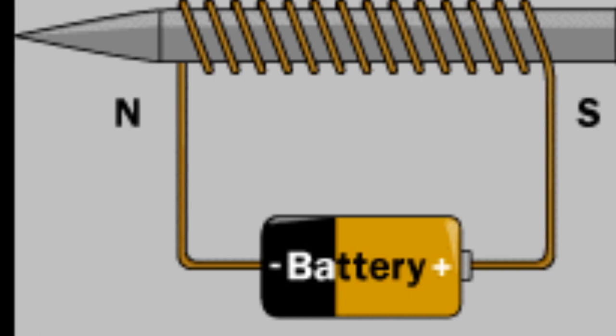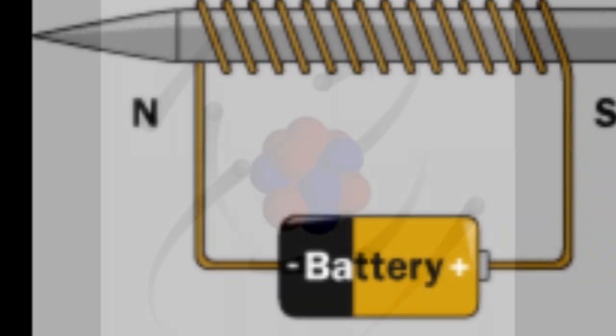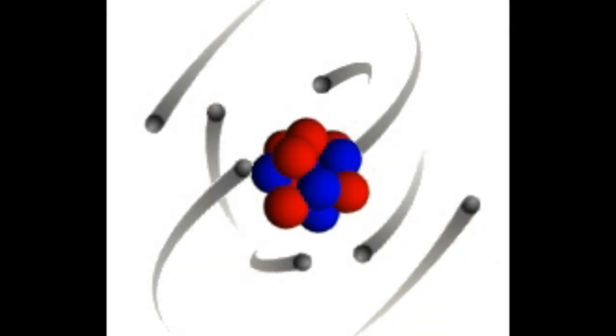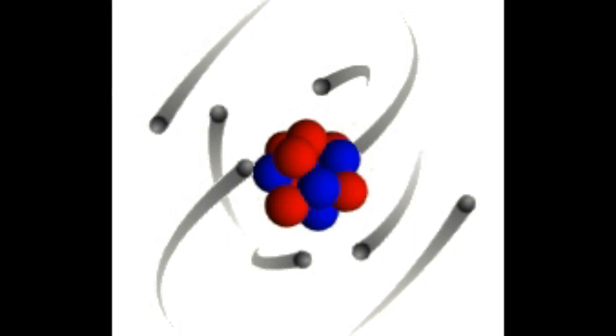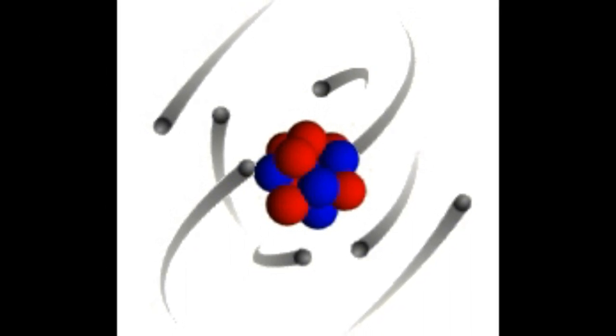If you don't remember from class, an electromagnet is a temporary magnet that is created by inducing an electrical current around a metal rod. Inside the rod, there are billions of electrons whizzing all over the place.